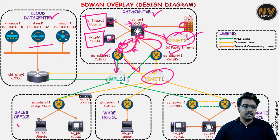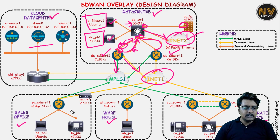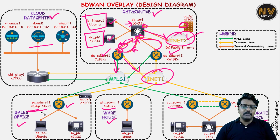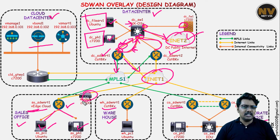We do have three branches: sales office, warehouse, and corporate office. Specifically for the sales office, we have one router — please note it is a VHcloud, whereas all other boxes are going to be CAT8kv; this is the only one which is VHcloud. We do have a directly connected user machine and a voice phone: the voice phone will be in VPN 20, and the user machine will be in VPN 10. On this side, we have a modem provided by the internet service provider, and the modem will assign a DHCP IP to the router. All traffic will get NATted when it leaves to the internet.